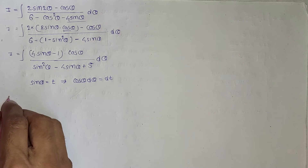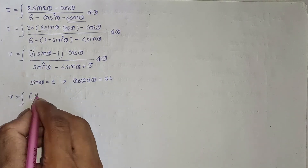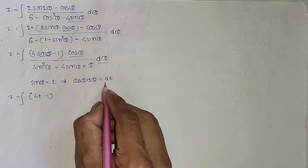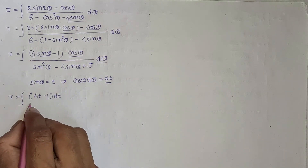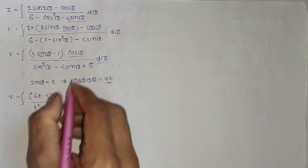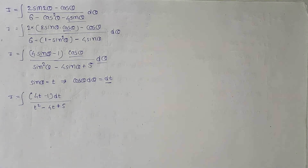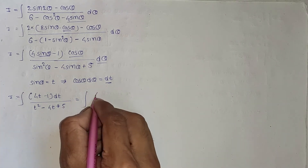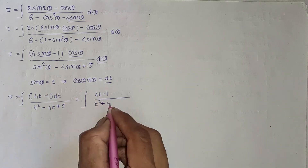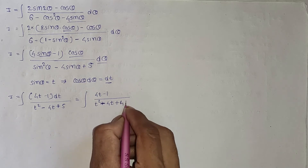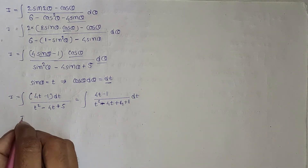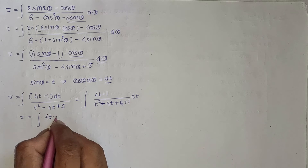Now take sine theta equal to t, so cos theta d theta is dt. So I equal to integration of 4t minus 1 divided by t squared minus 4t plus 5, dt.